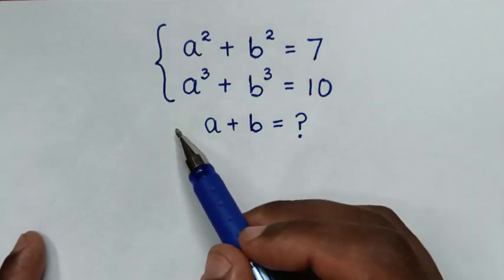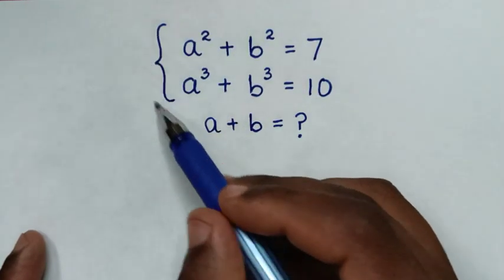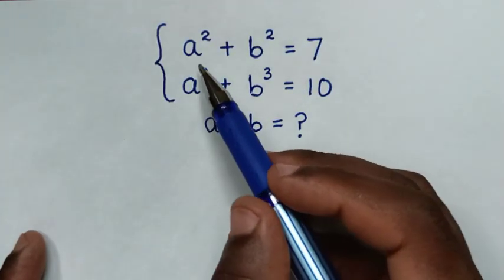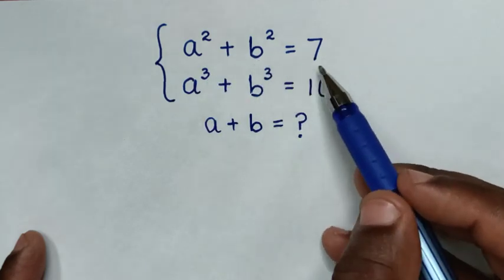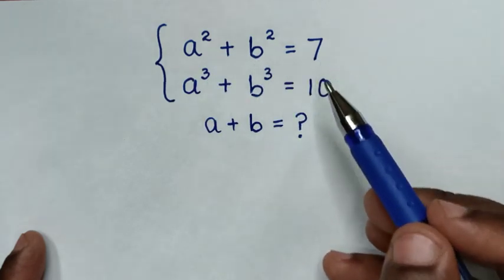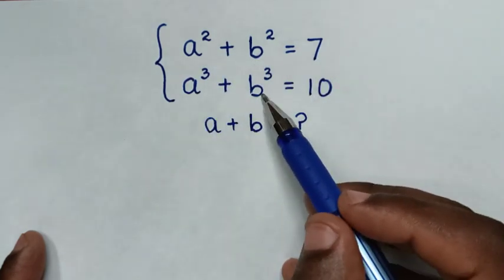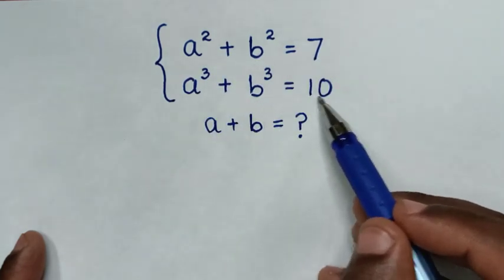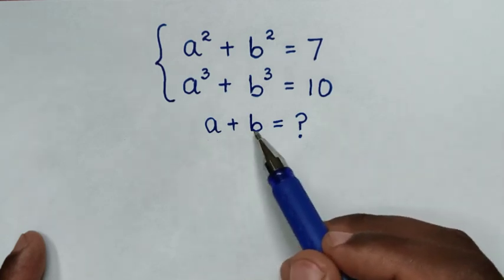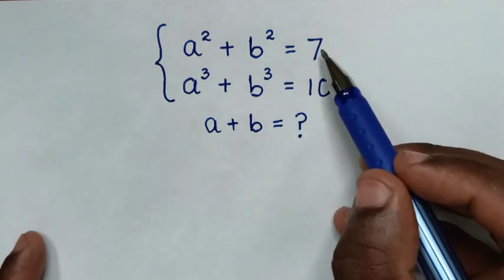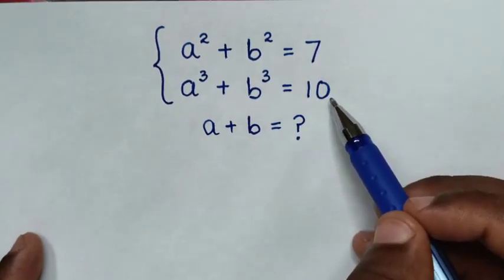Hello, you are welcome to solve this math problem, which is a squared plus b squared is equal to 7, and a power of 3 plus b power of 3 is equal to 10. We need to find the values of a plus b from these two systems of equations.